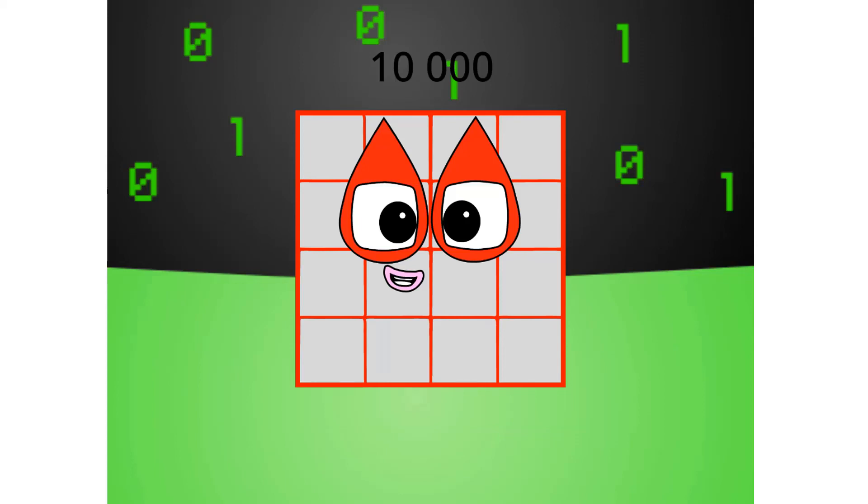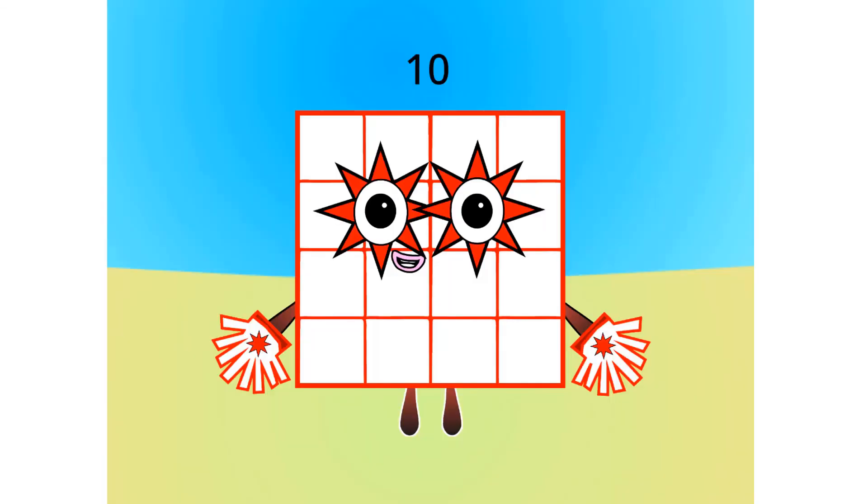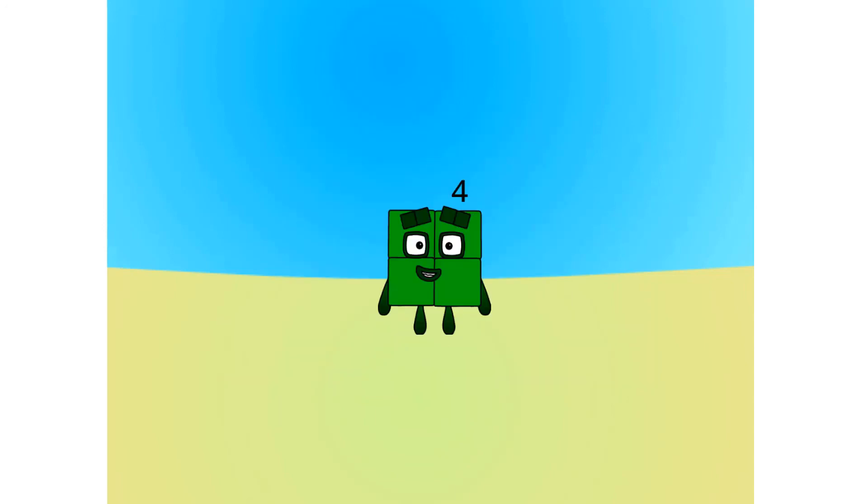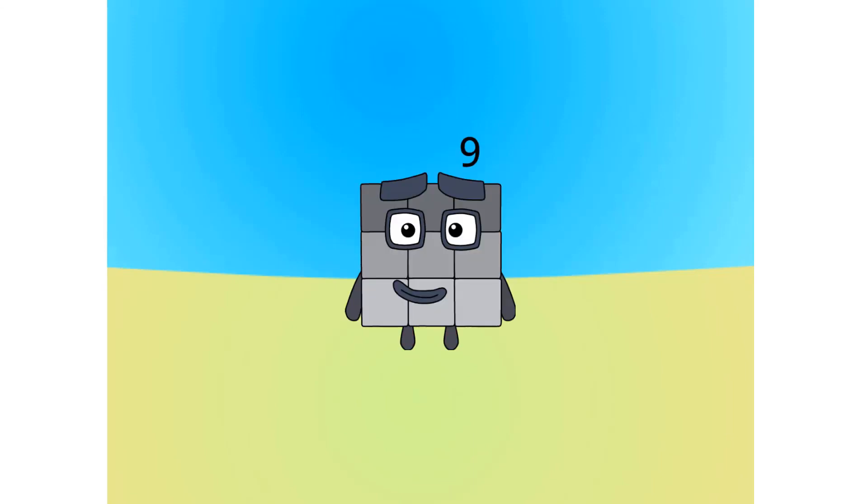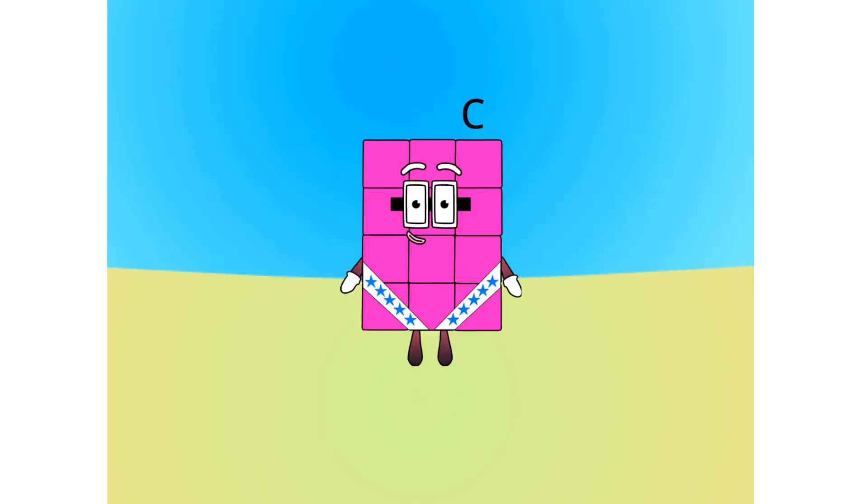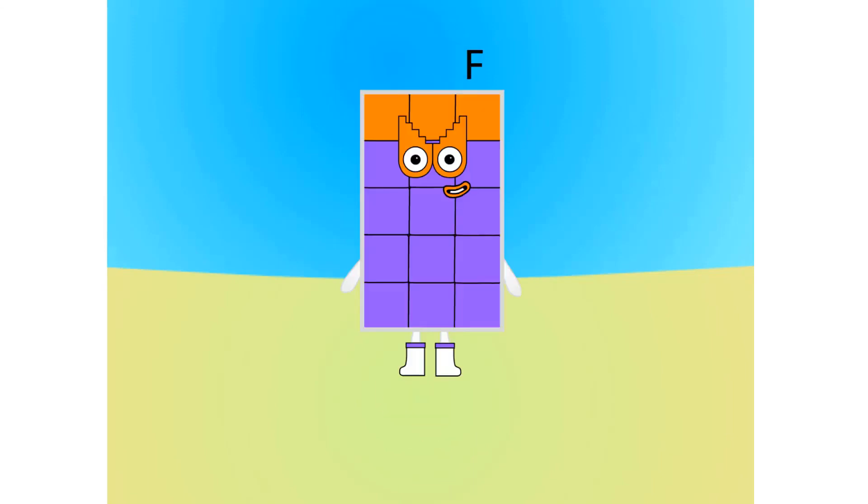Let's move on to the next base. This is base 16, also known as hexadecimal or hex. If this is base 16, there needs to be 16 digits. 1, 2, 3, 4, 5, 6, 7, 8, 9, A, B, C, D, E, F, 10.